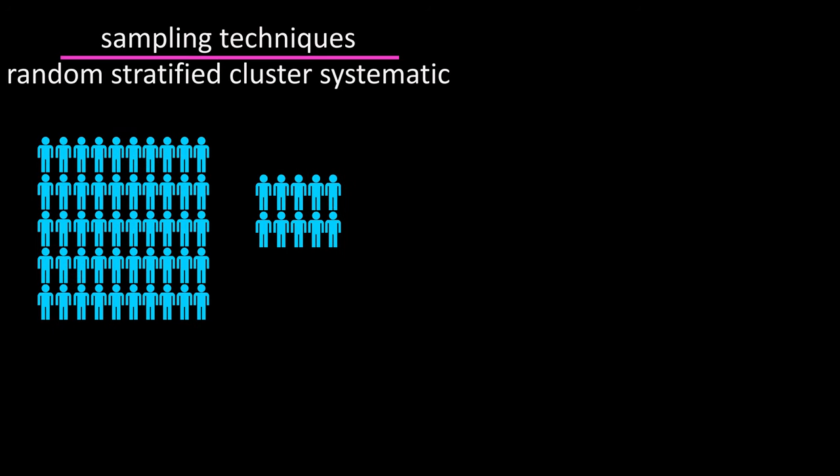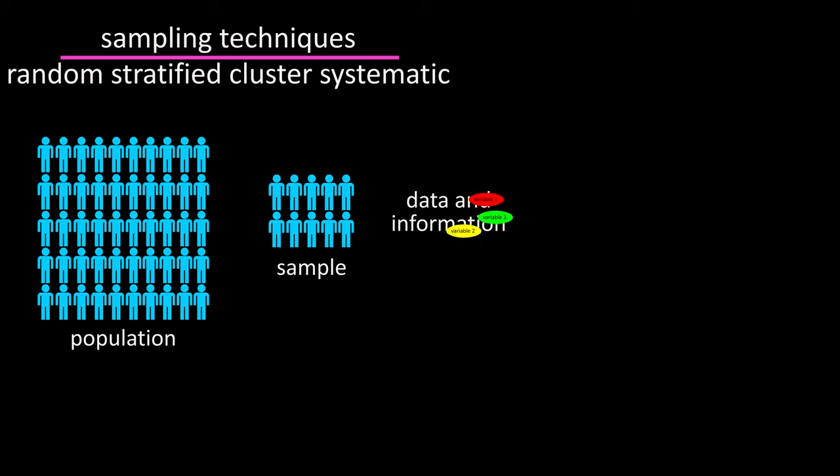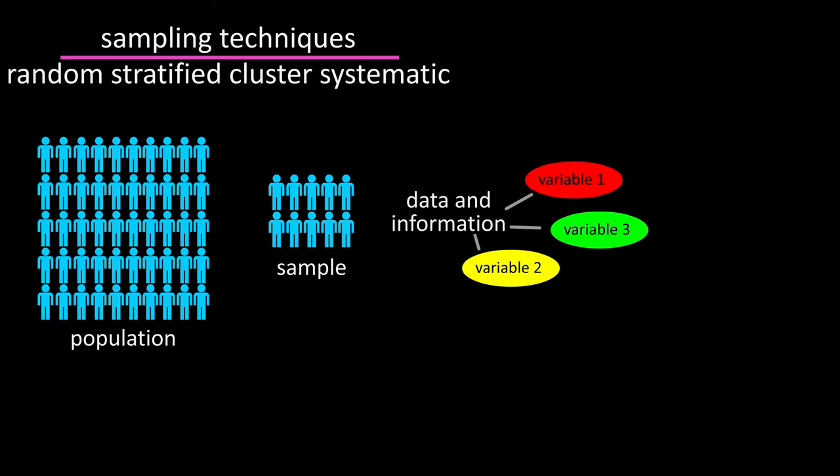A sample is part of a population and researchers use samples to collect data and information about a variable or variables from the larger population. To obtain samples that are unbiased, there are mainly four different sampling techniques or methods.